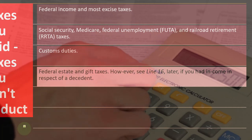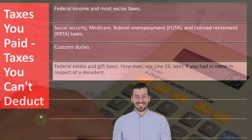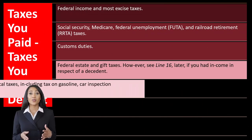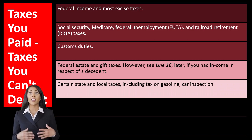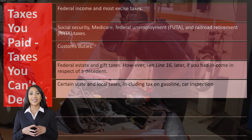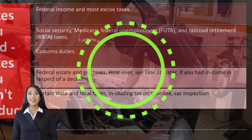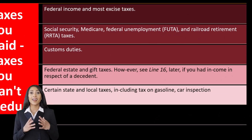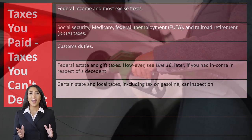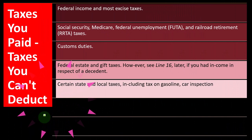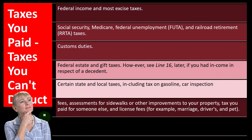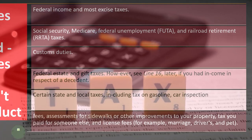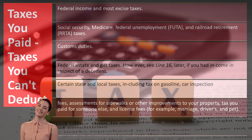You can't deduct federal estate taxes — if you died and you're above a certain threshold, the IRS comes and picks your corpse, so to speak. However, see line 16 later if you had income in respect to a decedent. The gasoline tax is supposed to tax people more who use roads as a public good. You might be able to deduct gasoline on a Schedule C business, but you can't just deduct the gas tax on Schedule A. Also not deductible: fees and assessments for sidewalks or other property improvements, taxes you paid for someone else, license fees such as marriage, driver's, and pet licenses, and foreign personal and real property taxes.